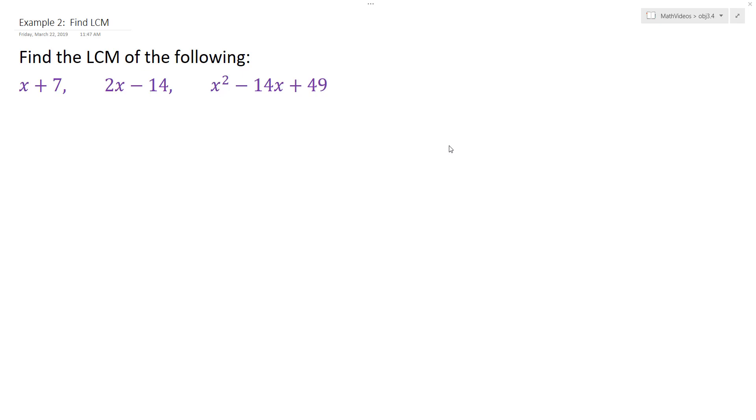We're going to find the least common multiple for the set of expressions that we have listed here. So we're going to start off with x plus 7 and work on factoring it down. What are the factors of x plus 7? Well, at the end of the day, it's really just 1 times x plus 7. So we'll just list the x plus 7 factor.